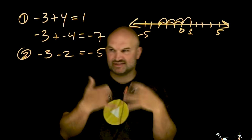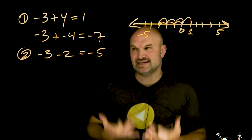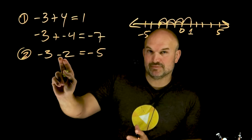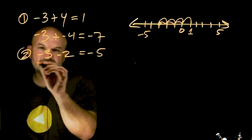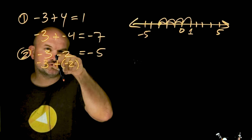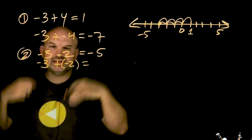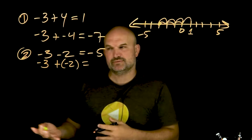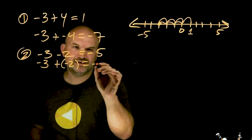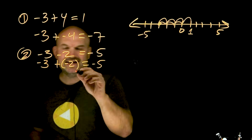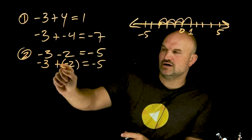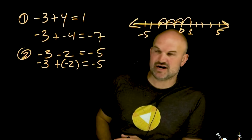One thing I always like to tell students, and what's really important especially when we're dealing with negative numbers, is we can always convert a subtraction problem to using addition. So I can rewrite negative three minus two as negative three plus a negative two. Negative three plus negative two is the exact same thing — negative five. I think it's a little bit easier to reason when we're adding a negative rather than dealing with subtraction.